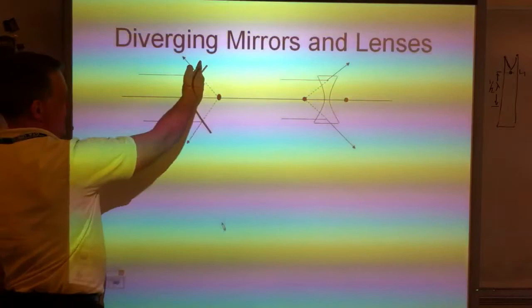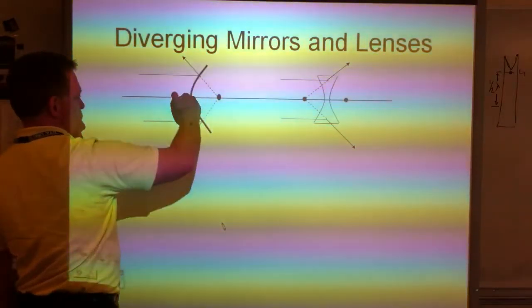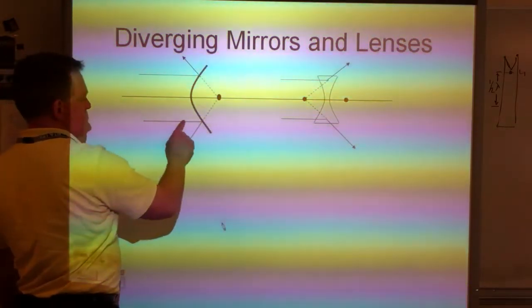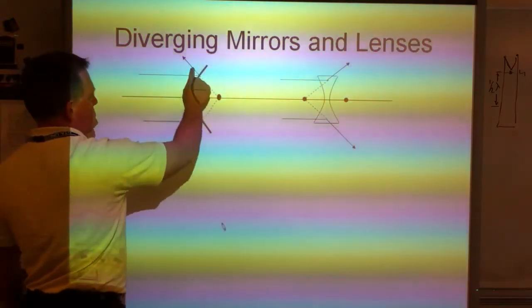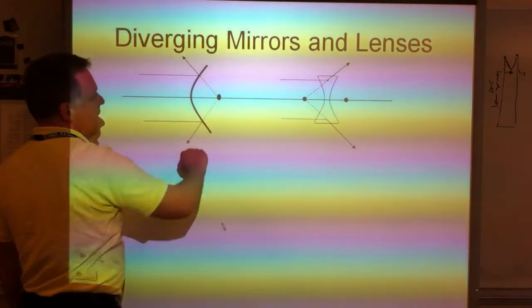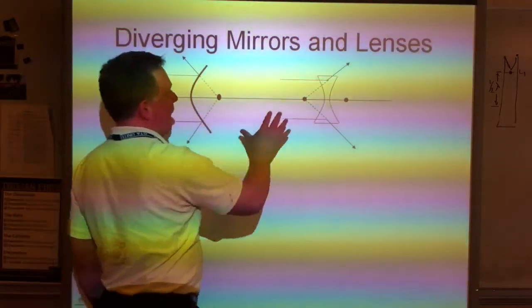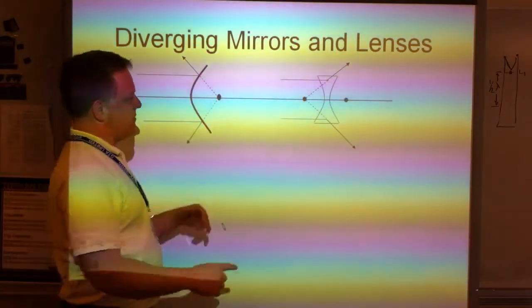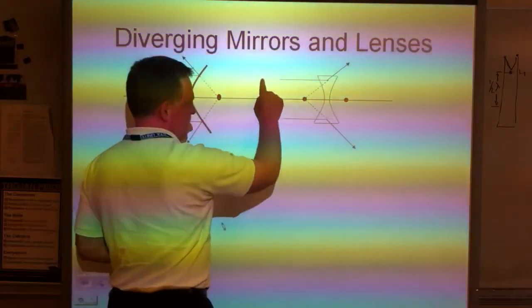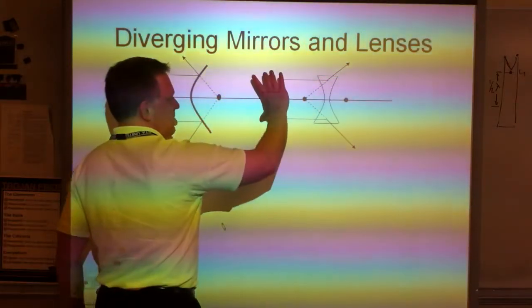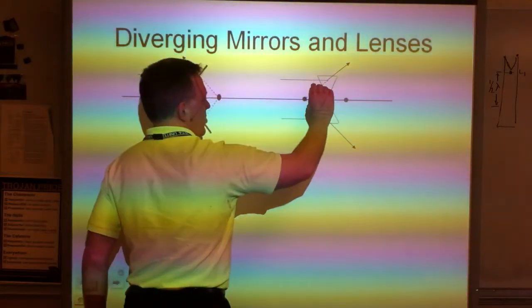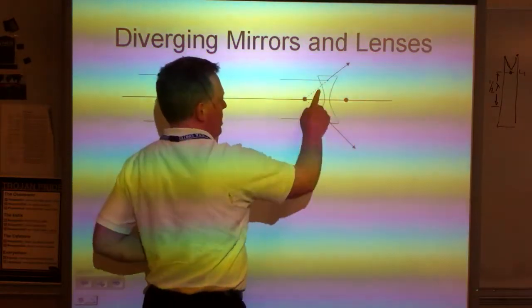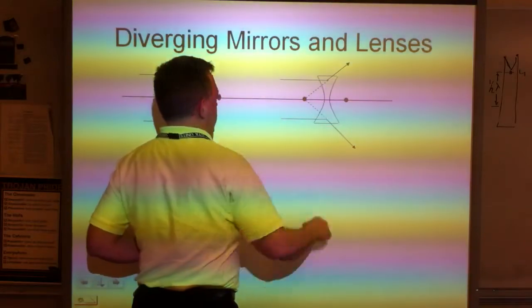If I have a convex mirror, meaning it bows out, light that comes in parallel is going to hit the mirror and then bounce away from the focal point, which is on the other side of the mirror this time. Same thing for a concave lens. Because this is like a cave, the light's coming into a cave, these parallel rays are going to get here and instead of converging toward this focal point, they'll diverge from this focal point and spread the light out.